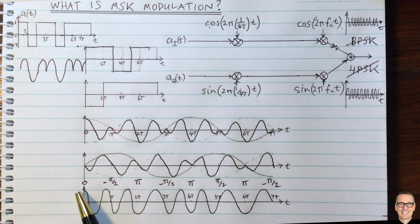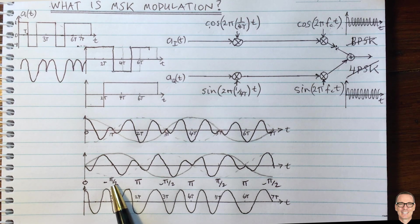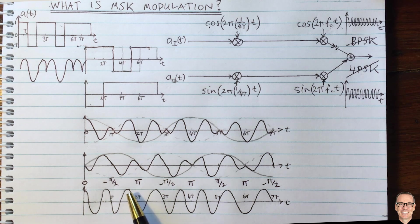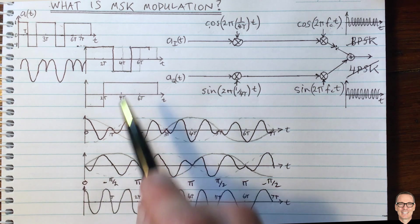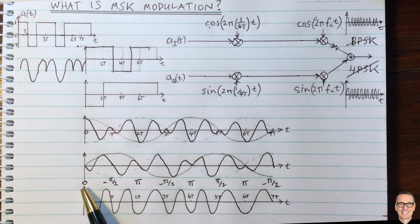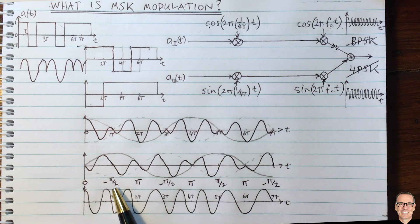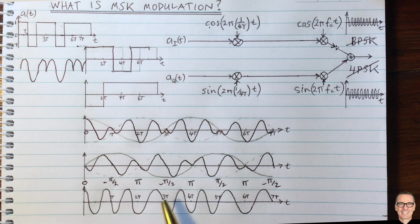You never make a phase transition of π — you never go from 0 to π, or from -π/2 to π/2. In MSK, you always have a minimum shift of only π/2, either positive or negative, at each symbol timing. That's why it's called minimum shift keying.